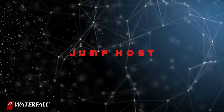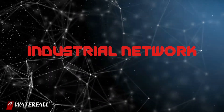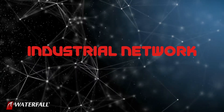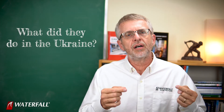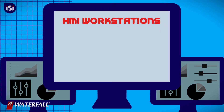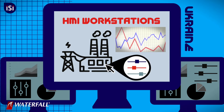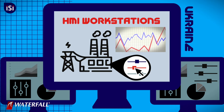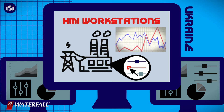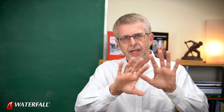They log in to the jump host, and from the jump host they go through to the industrial network. Once on the industrial network, they looked around — as was done in Ukraine — and found the HMI workstations. These are the computers that the operators used to visualize and control the physical process. What the attackers did in Ukraine, and what they do in this scenario, is find a way to visualize the HMI screens.